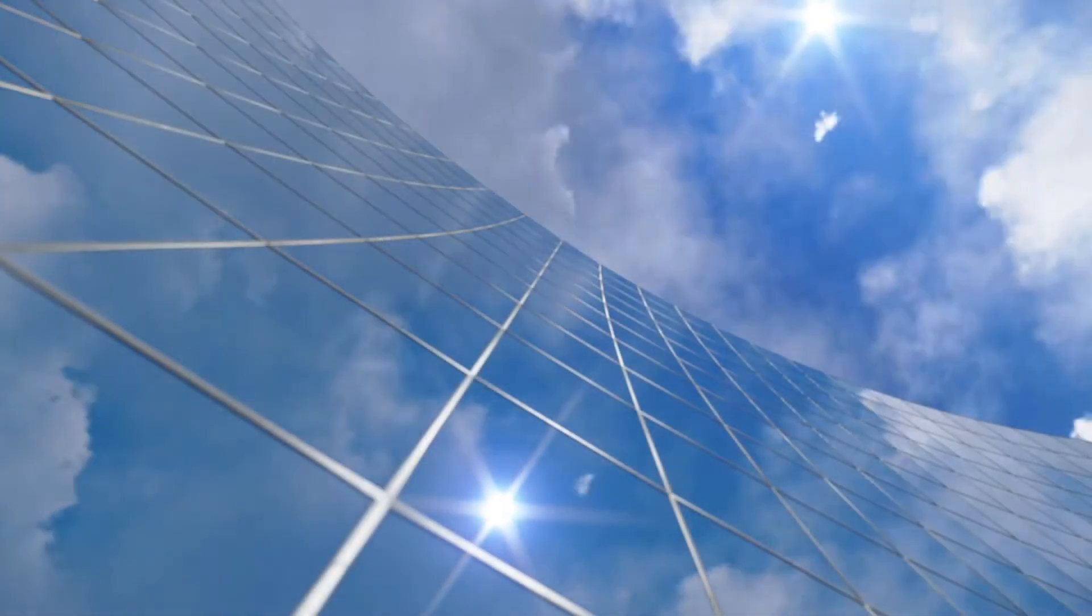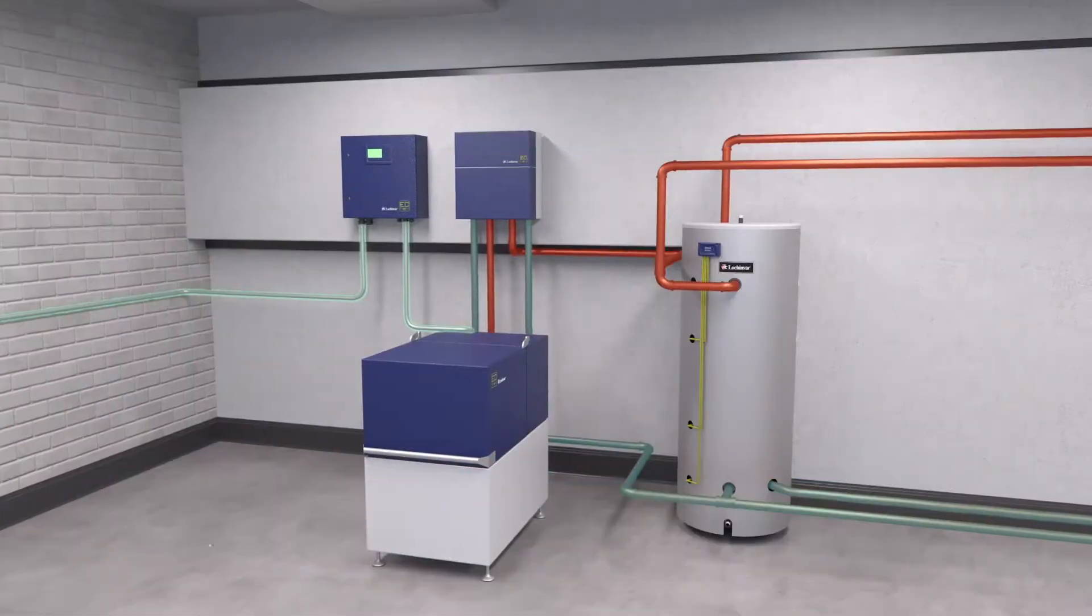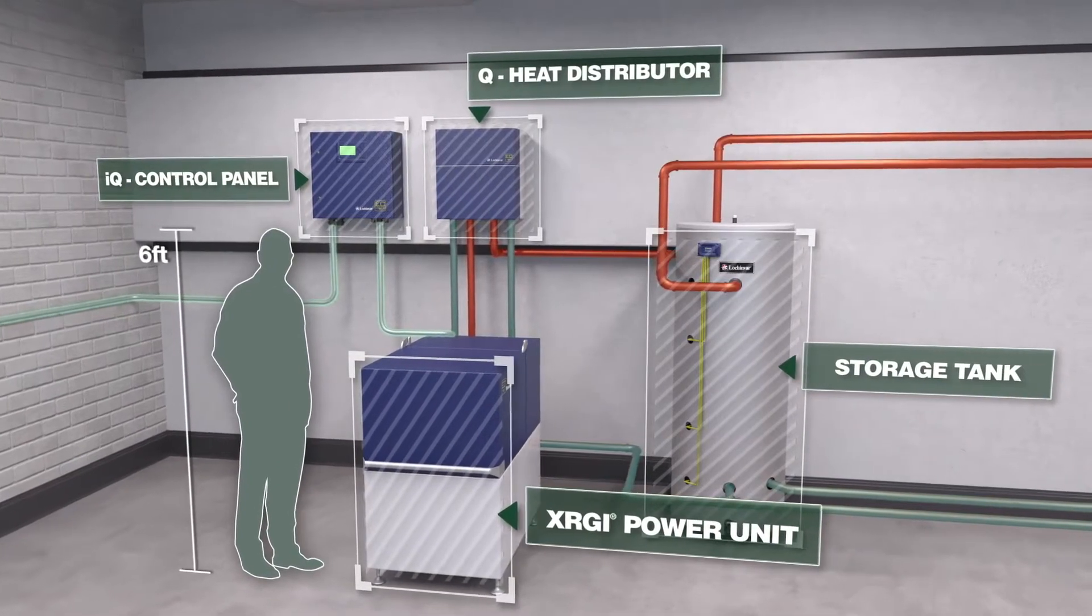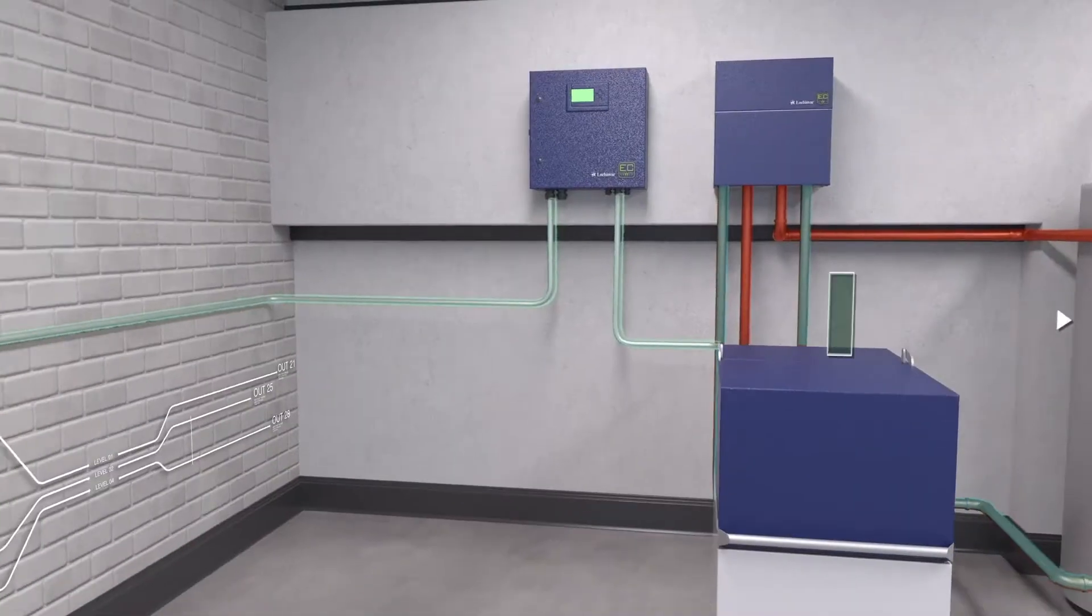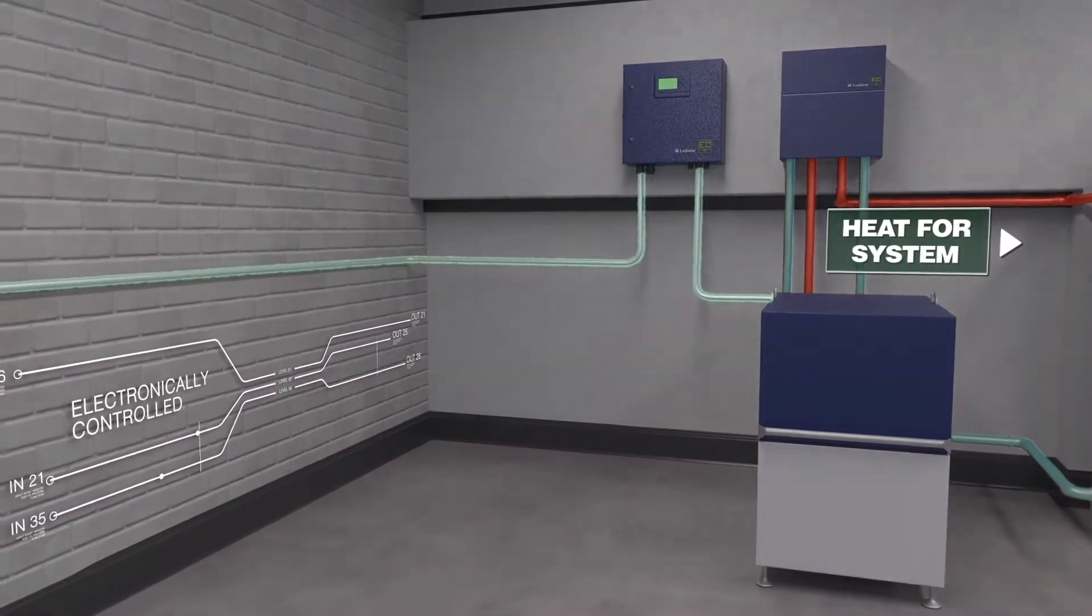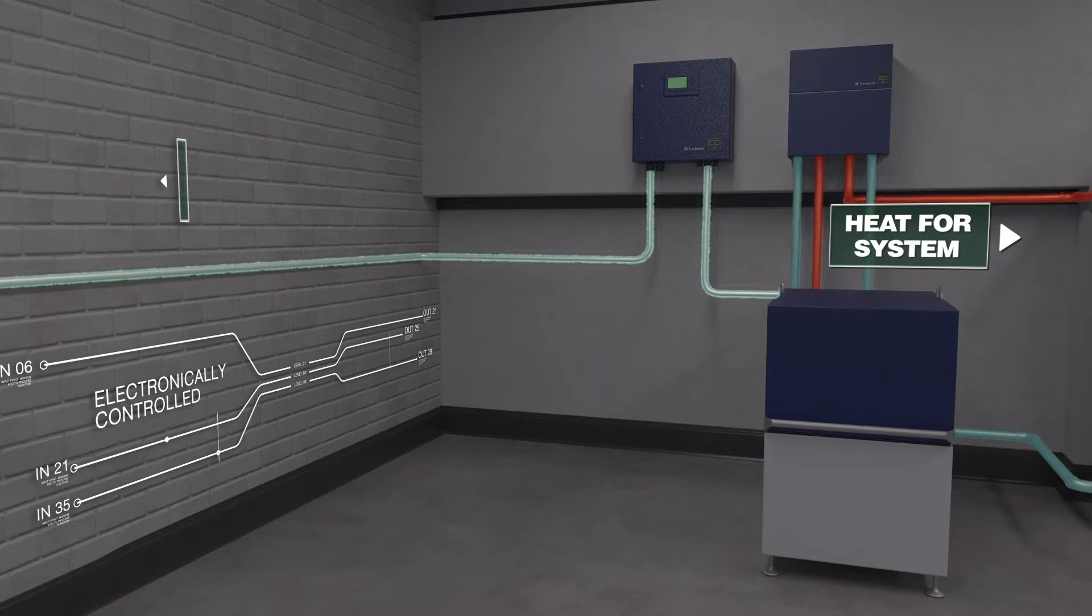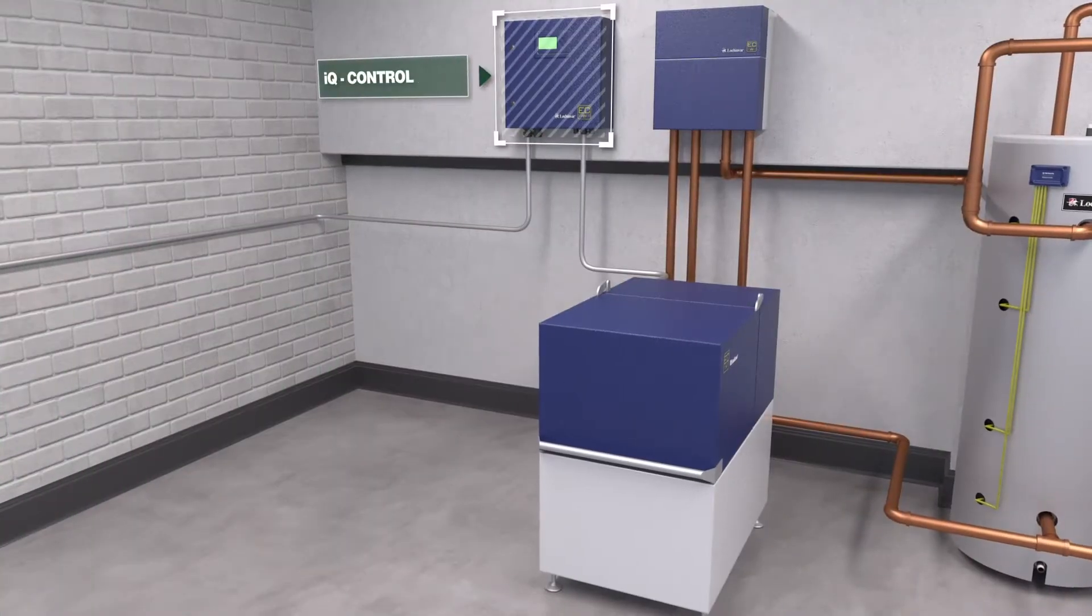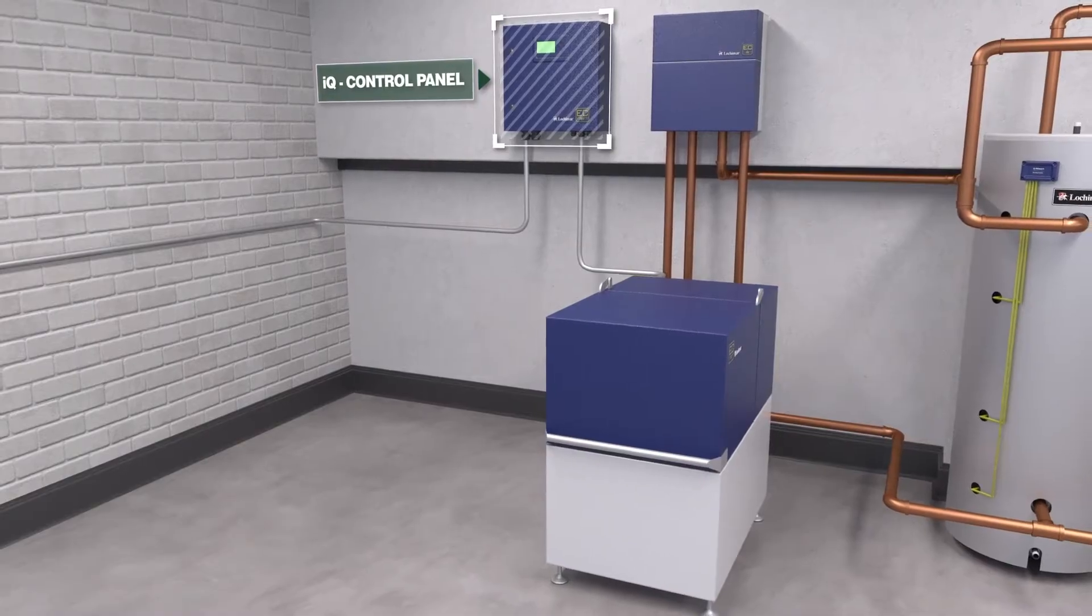The system has four main components, each electronically controlled to provide heat while generating electricity for the building. The IQ control panel regulates operation of the power unit.